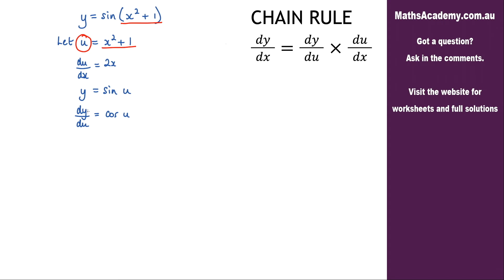So now that I've got dy by du and du by dx I can go ahead and use this chain rule. So dy by dx is equal to dy by du multiplied by du by dx. Well dy by du we know is cosine of u and we are multiplying that by du by dx which is 2x.